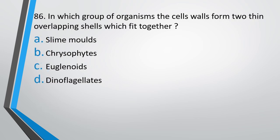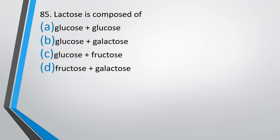Question number 86. In which group of organisms do the cell walls form two thin overlapping shells which fit together? Correct answer is option B — Chrysophytes. Question number 58. Lactose is composed of: Glucose plus glucose; Glucose plus galactose; Glucose plus fructose; or Fructose plus galactose. The correct answer is option B — Glucose plus galactose.